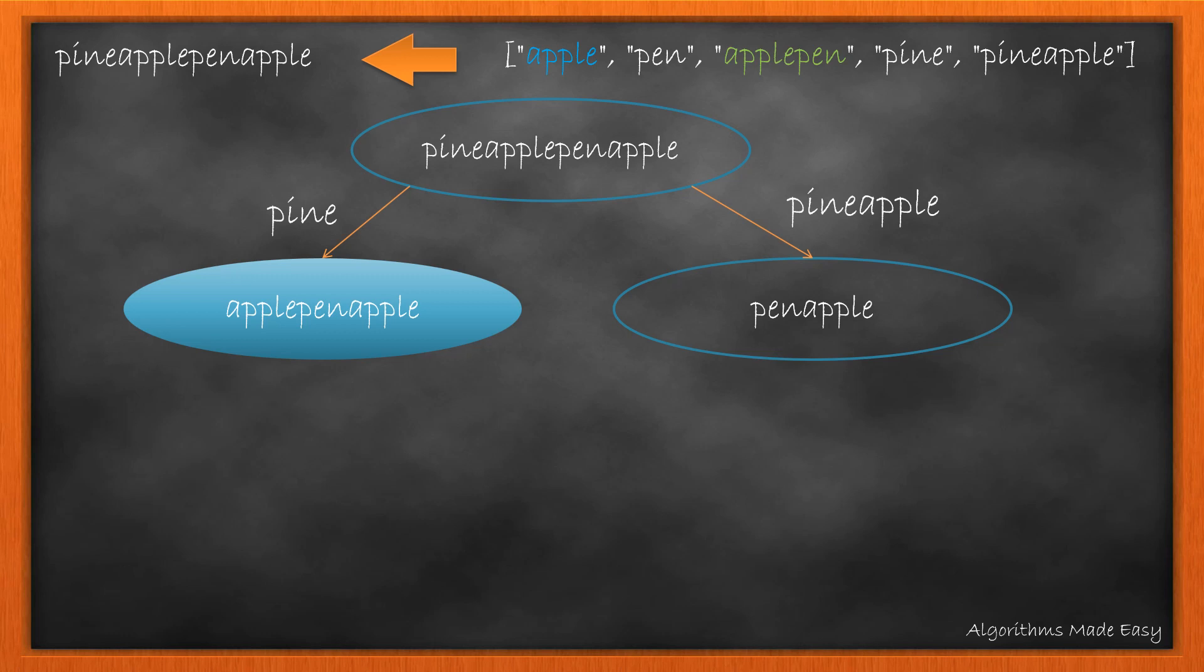Here, we can see we have two matching starting strings in the dictionary, apple and applepen. After breaking the word using these two strings, we get two more words which are the suffixes of previous string.